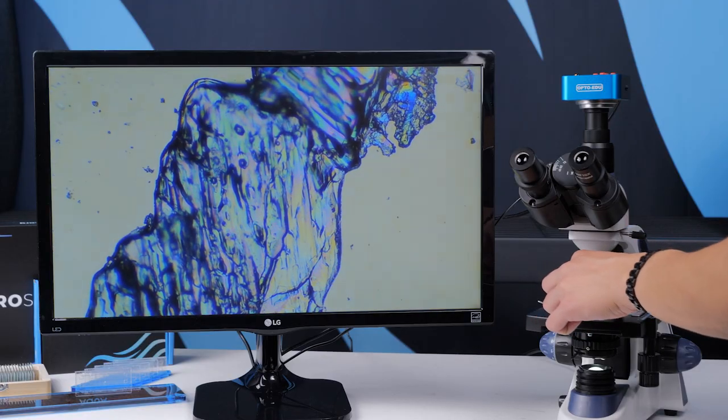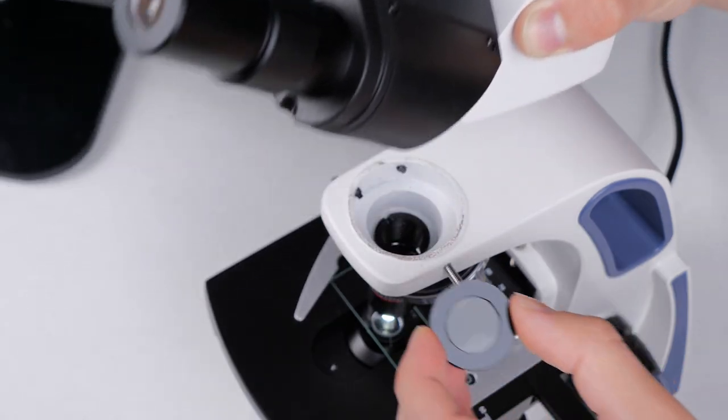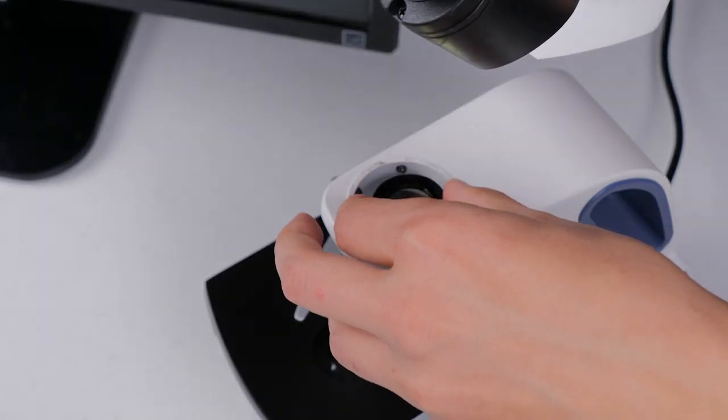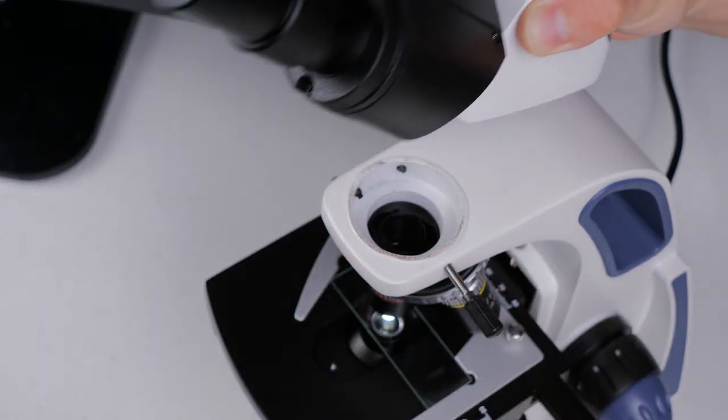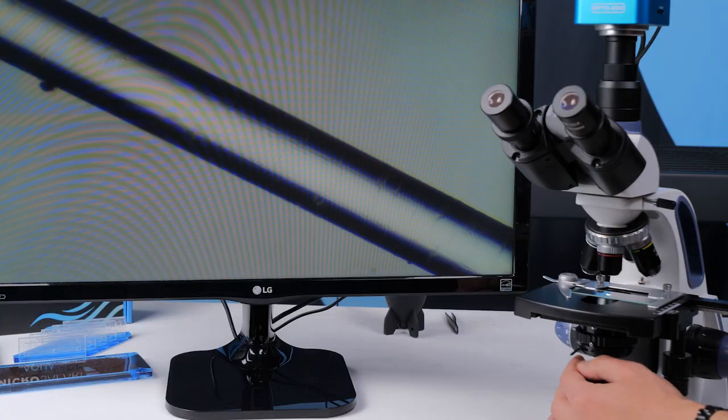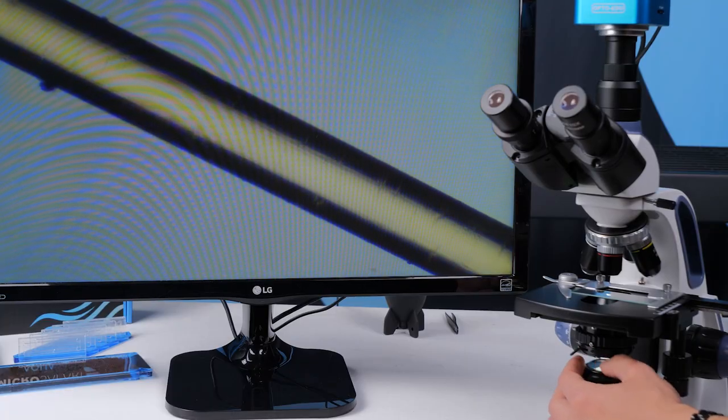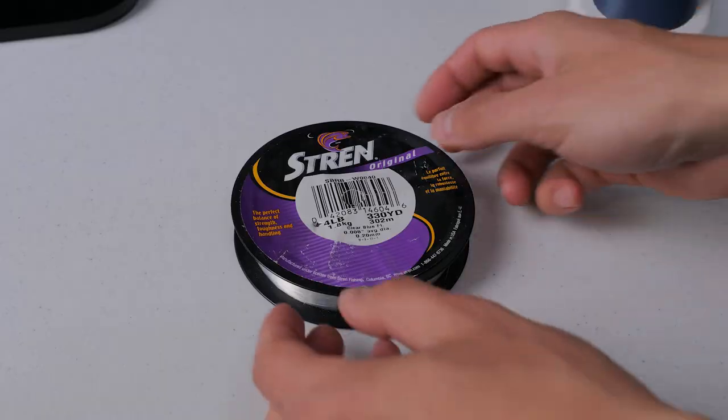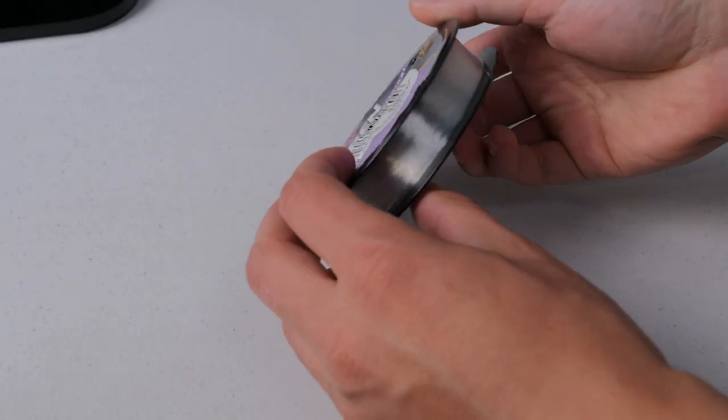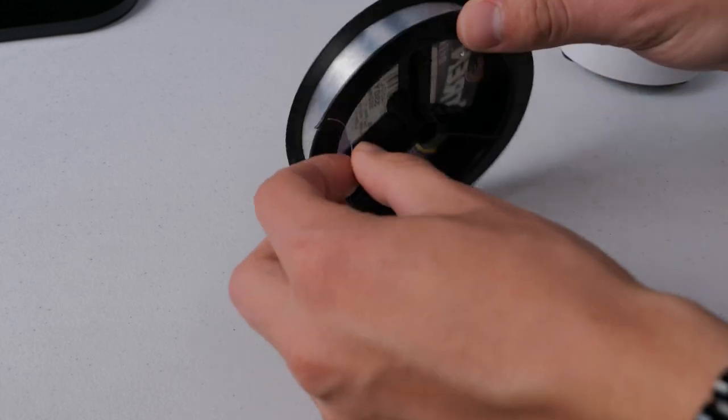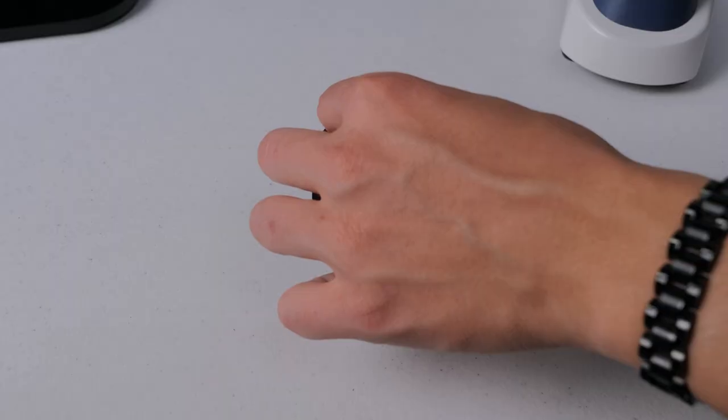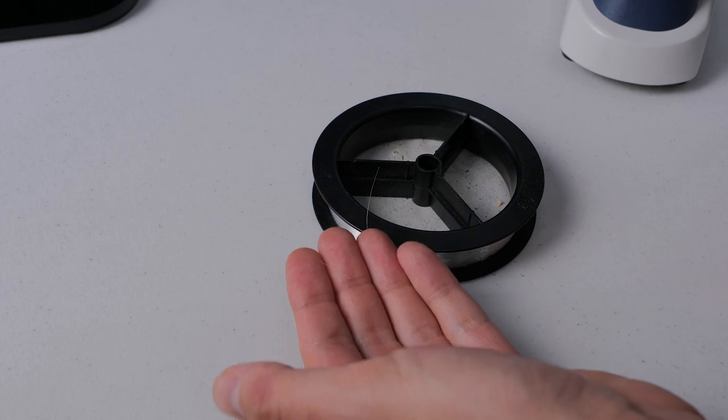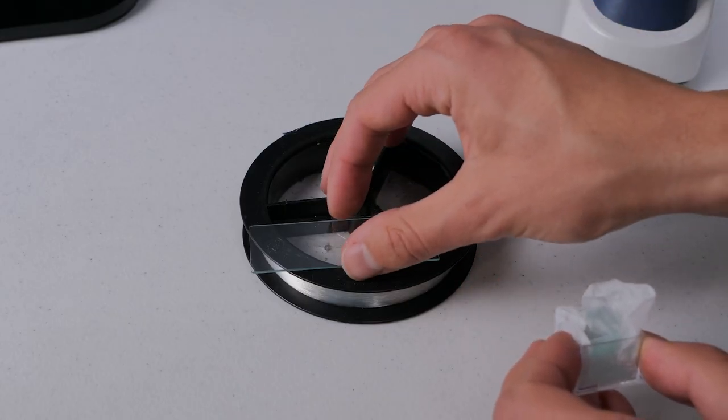To change the polarization angle you'll need to rotate the polarizing filter in the filter holder or if you're using the manual flag you can just rotate that. There are many samples that work well under polarized light conditions. For testing and calibration I recommend using nylon in some form, either bristles from your toothbrush or fishing line, placed on a microscope slide under a cover slip.